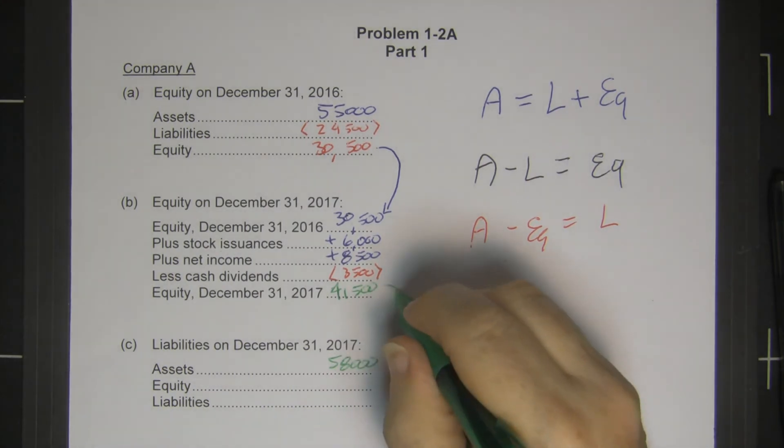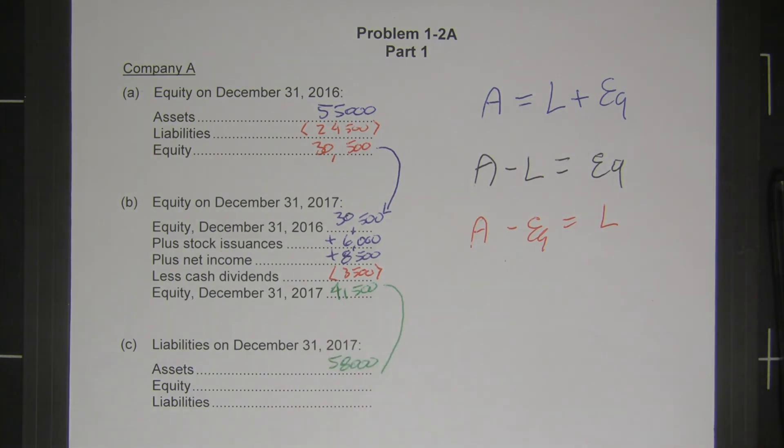Well, they gave us the equity, so we'll subtract the equity. Assets minus equity equals liabilities. That's this one to play with. And that gives us $16,500.